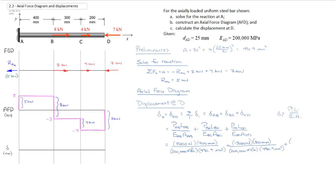And then finally our displacement between C and D — again include the negative sign: negative 7,000 newtons, 200 millimeters, all divided by 200,000 megapascals and 490.9 millimeters squared.